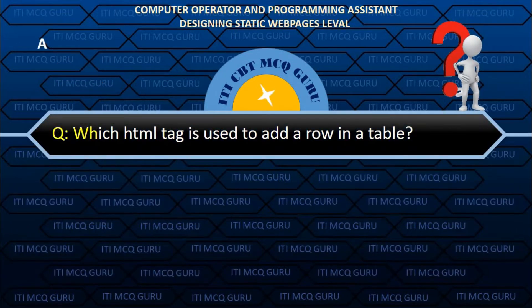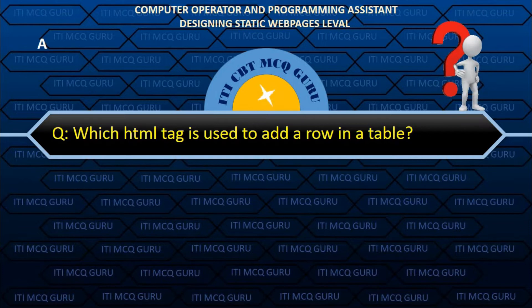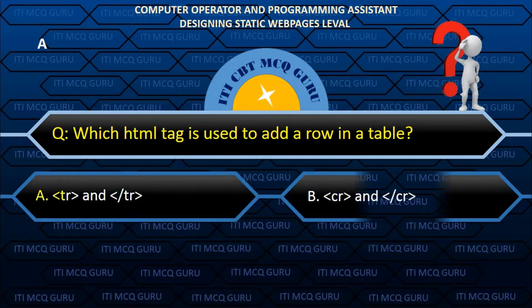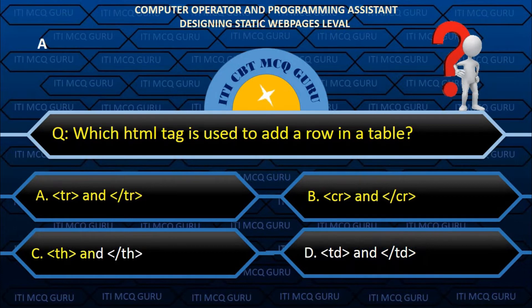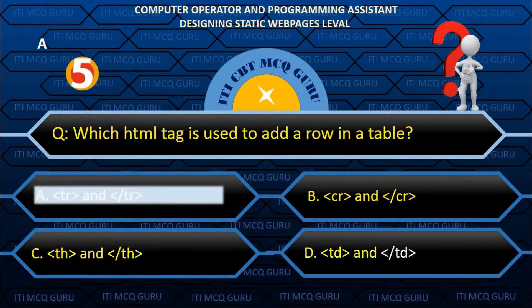Which HTML tag is used to add a row in a table? A. tr and /tr.